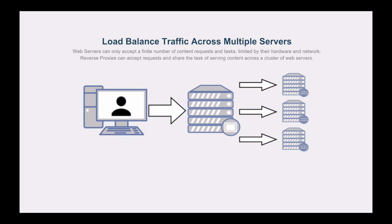Another type of reverse proxy is a load balancer, which you've probably heard of before. If you have a large website such as amazon.com, no matter how powerful a web server you buy, it won't be able to handle all the requests coming in. So you send all the traffic to a load balancer which distributes the load to multiple different web servers — and this is also a type of reverse proxy. It takes all the traffic going into amazon.com and filters it out to many different servers, but as far as the end user is concerned, the load balancer is the web server they're getting their content from.